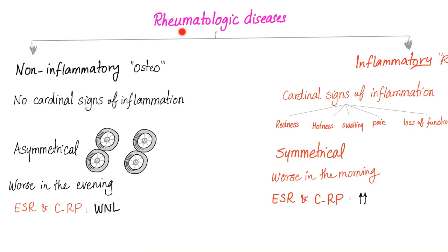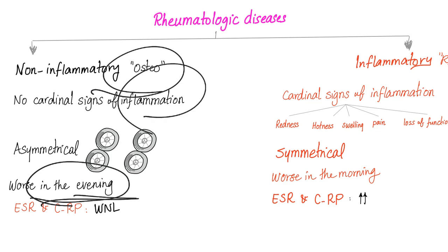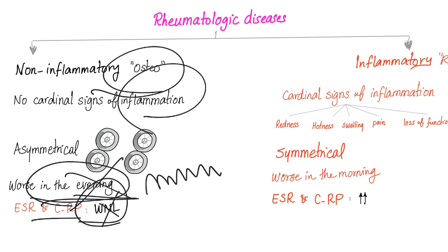Rheumatological diseases are subclassified into non-inflammatory and inflammatory. Non-inflammatory, such as osteoarthritis: no cardinal signs of inflammation, asymmetrical because it's wear and tear, worse in the evening at the end of the day because it's mechanical. At the end of the day you've had lots of wear and tear, so it's really bad. ESR and CRP are normal, and B27 should not be elevated — if it is, it's probably because 7% of Caucasians already have it.